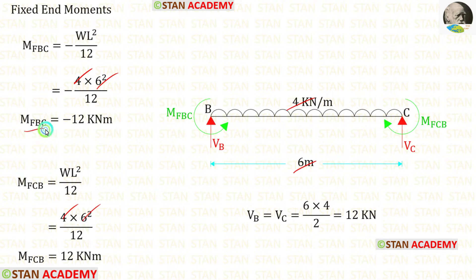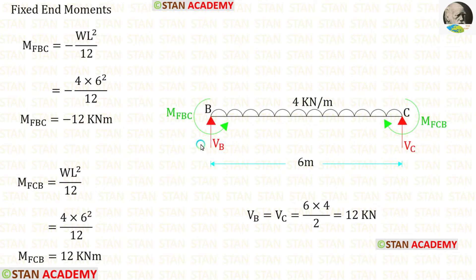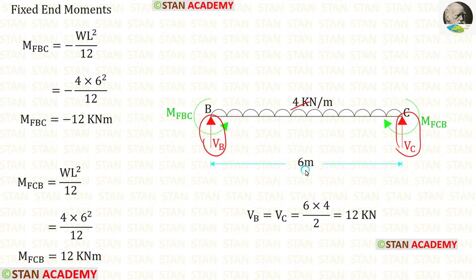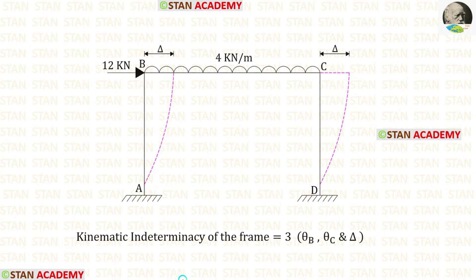Finally, for M of BC we are getting minus 12, and for M of CB we are getting 12. Now let us find the vertical reactions VB and VC. We have to multiply the UDL 4 with the distance and then divide by 2. When we do that, we are getting 12 kN.